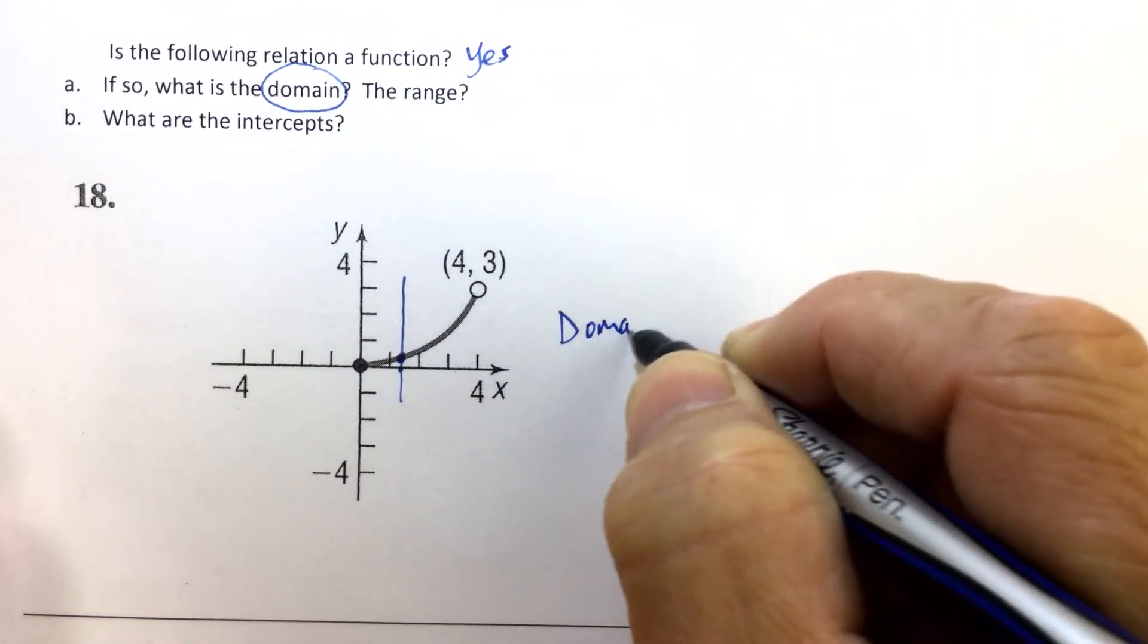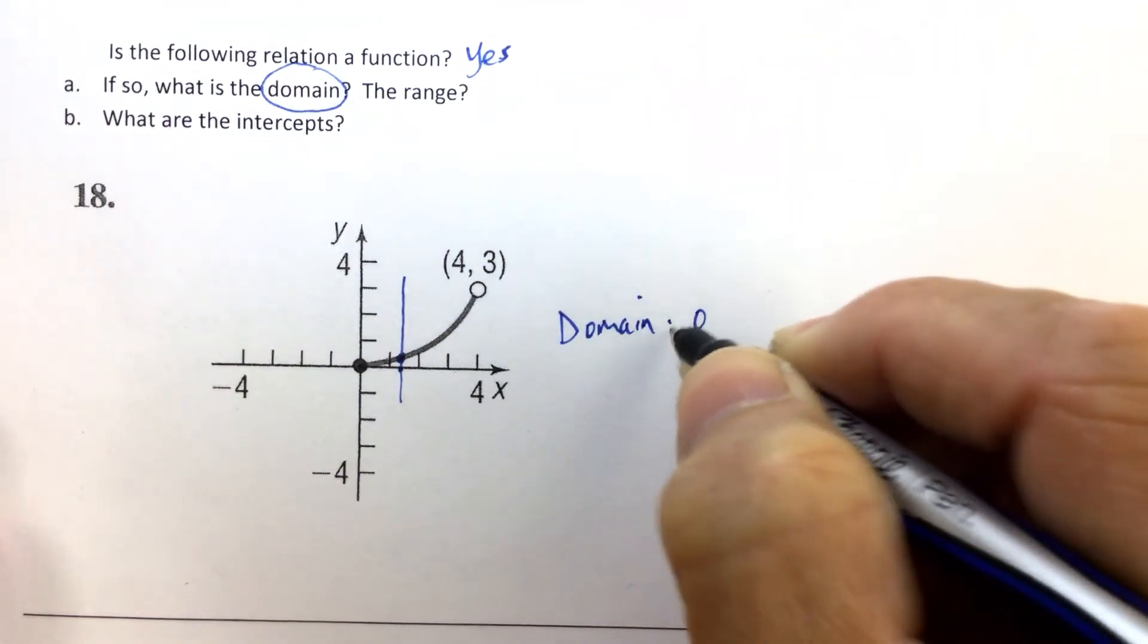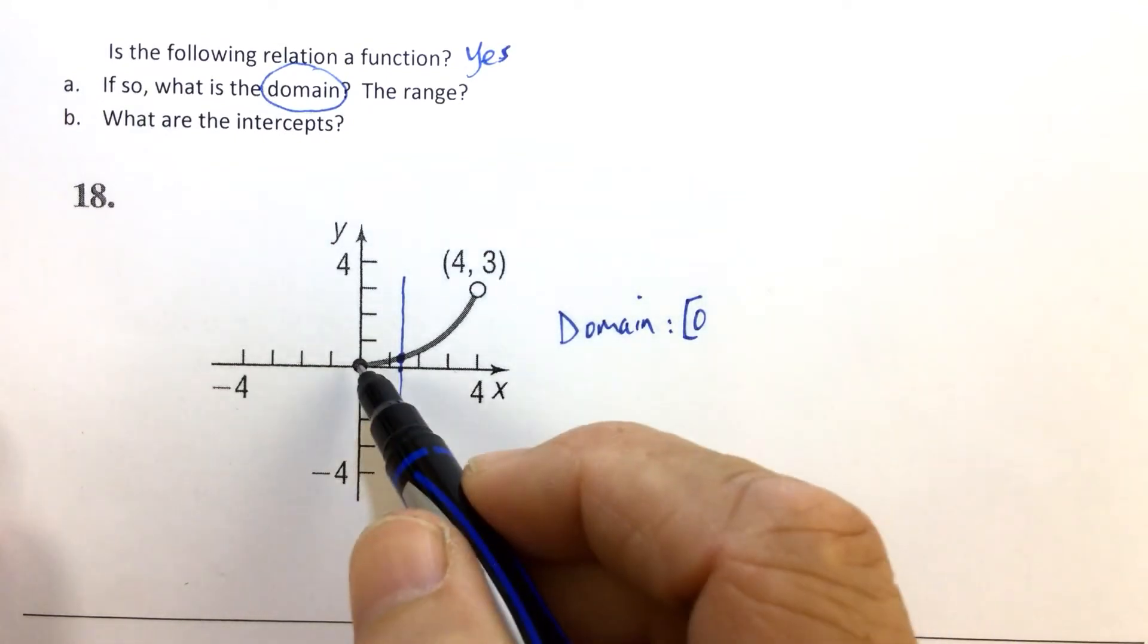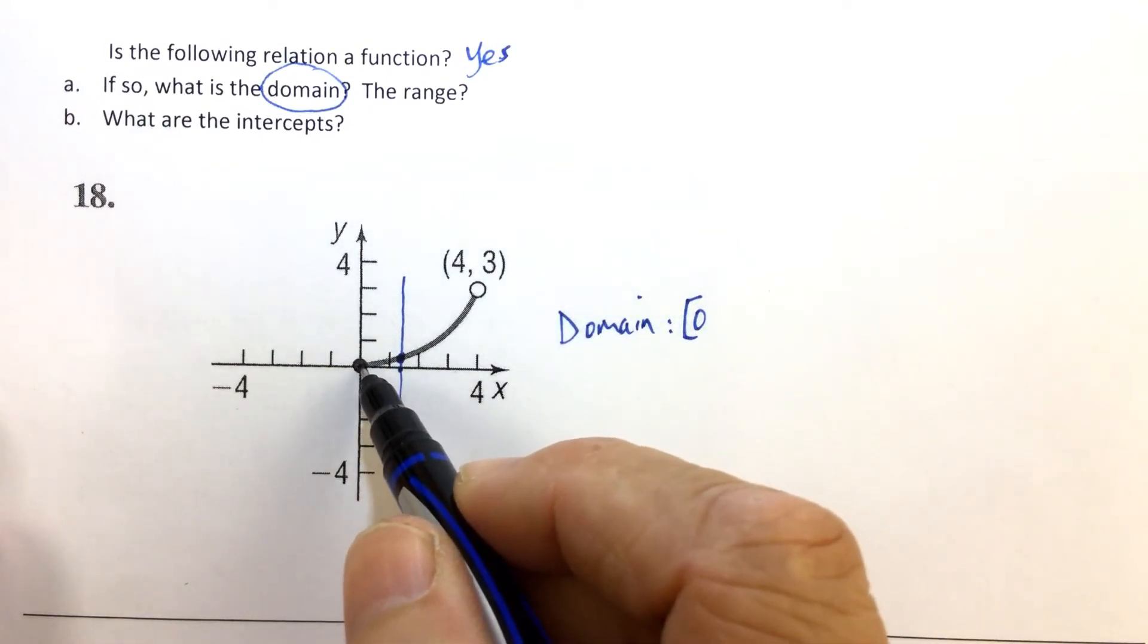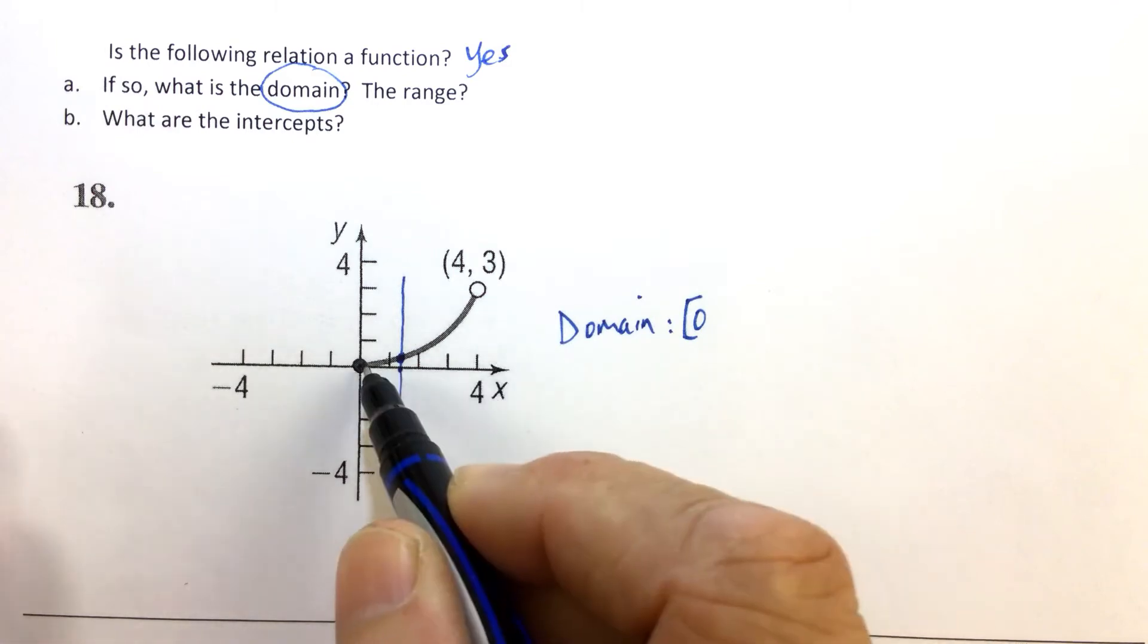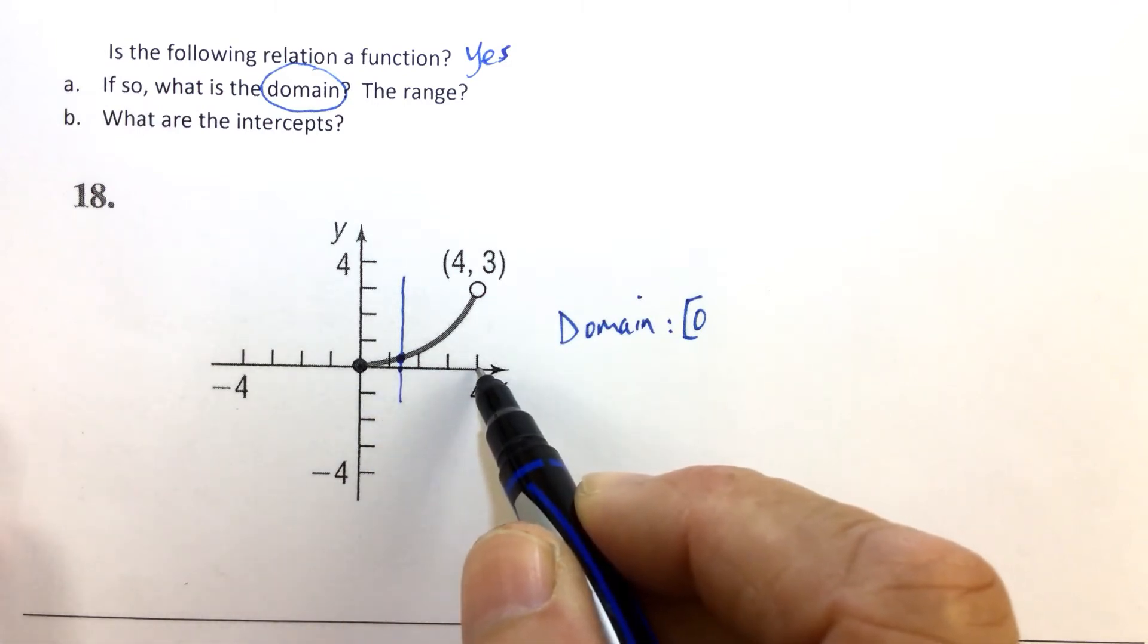So the domain—we'll put that down here—the domain starts at zero and includes zero. Are there any breaks in the graph as we move from left to right? No, there are no breaks in the graph.